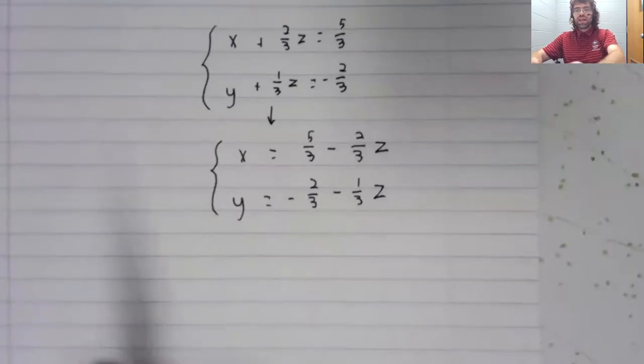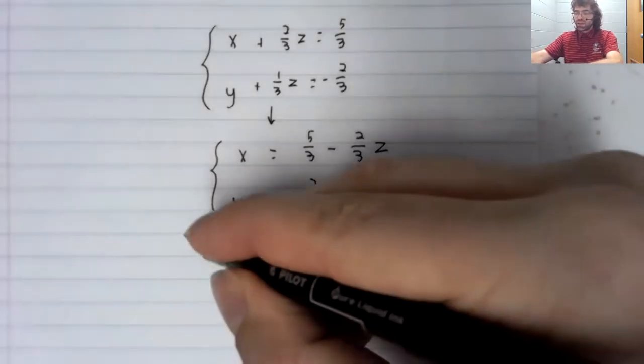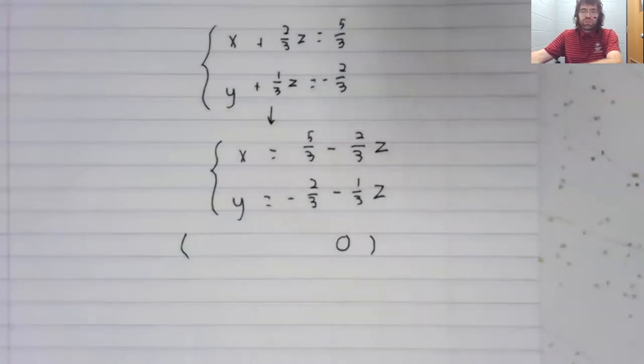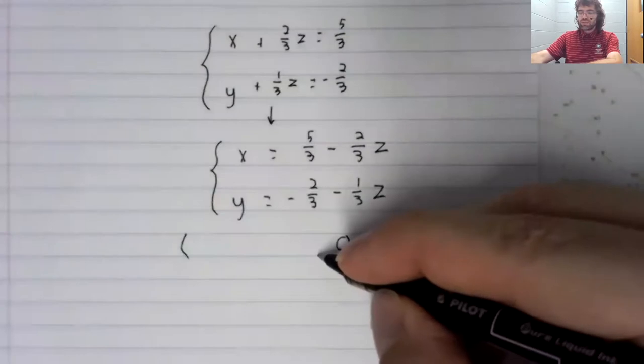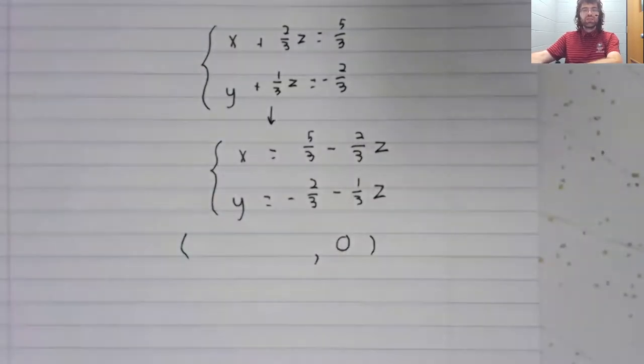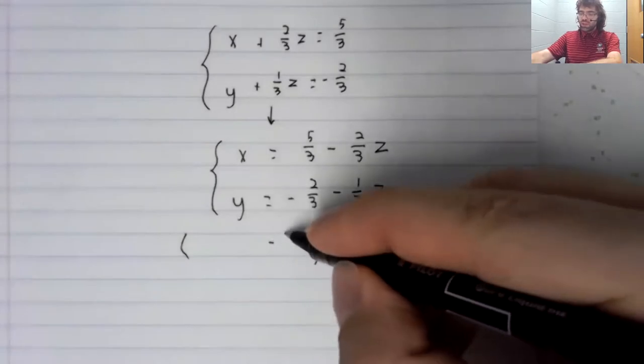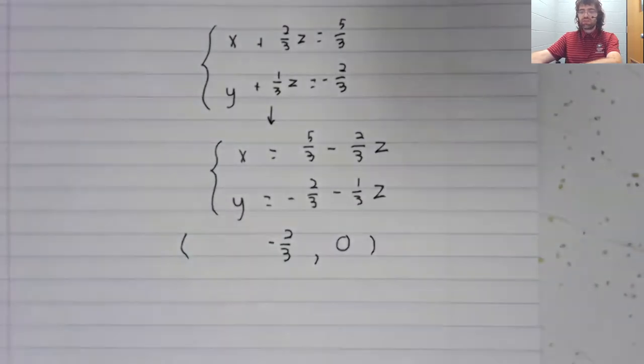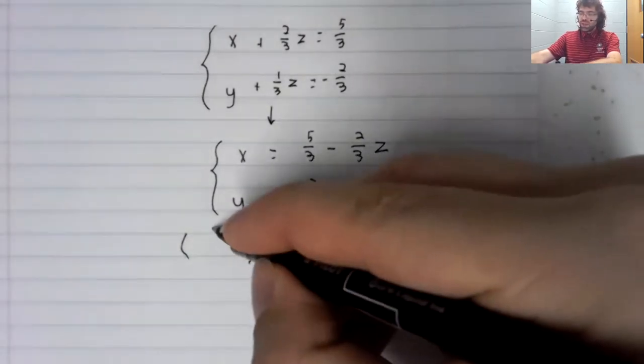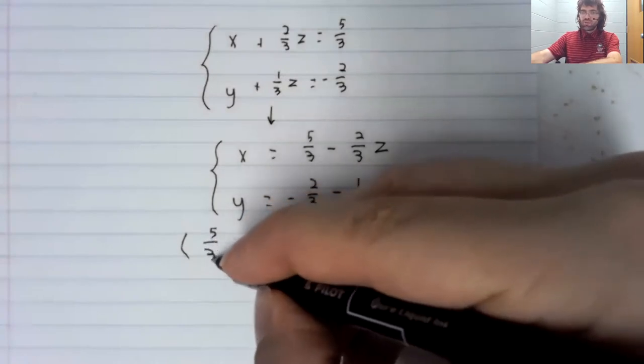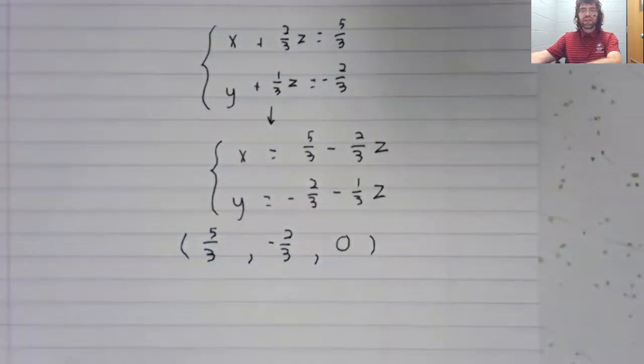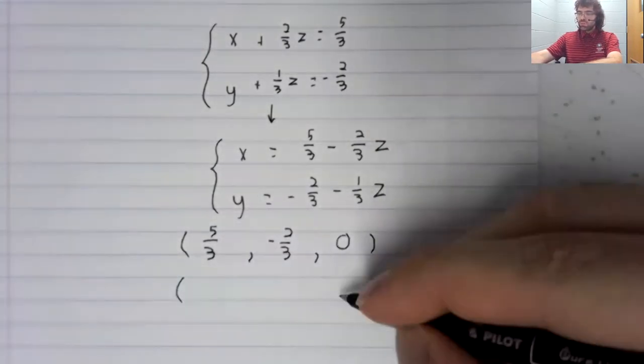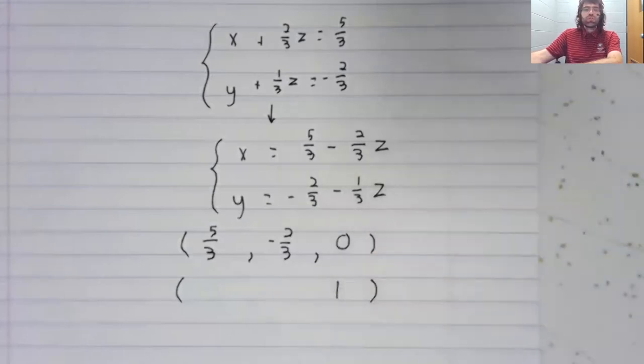z can be anything. So if we want z to be zero, we could do that. And once we've decided that z should be zero, that second equation tells us what y has to be, and that first equation tells us what x has to be. Or z could be one.